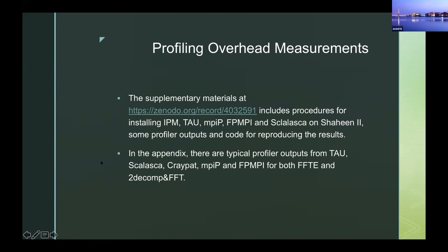On a web page, we uploaded supplementary materials that include procedures for installing IPM, TAU, MPIP, FPMPI, and Scalasca on Shaheen 2, with some profiler outputs and code for reproducing the results. Also in the appendix of the paper there are typical profiler outputs from TAU, Scalasca, CrayPat, MPIP, and FPMPI for both libraries FFTE and 2decomp FFT.